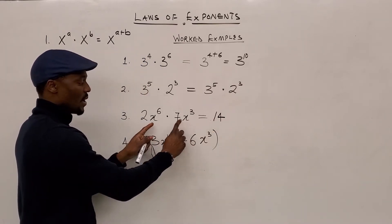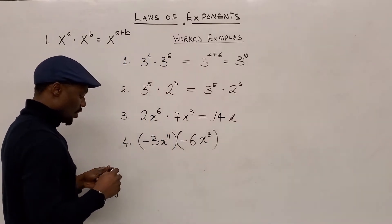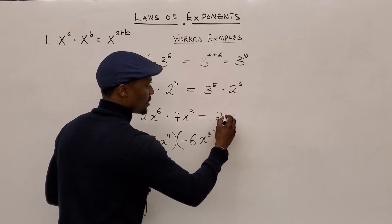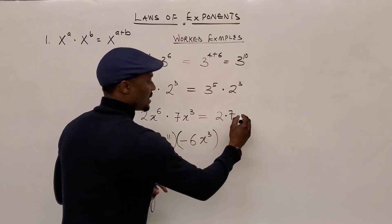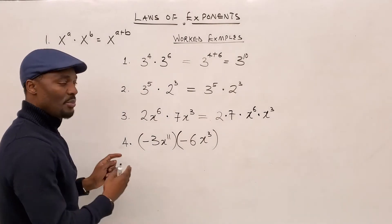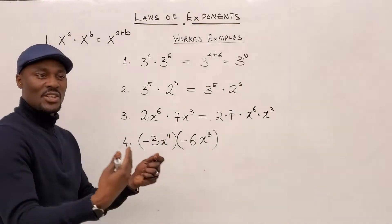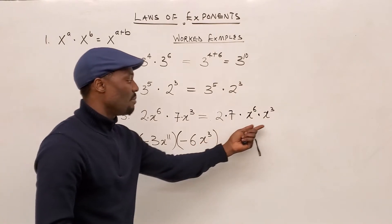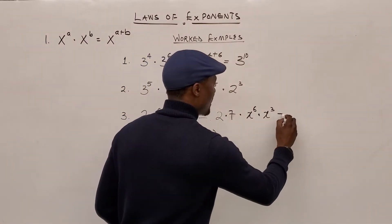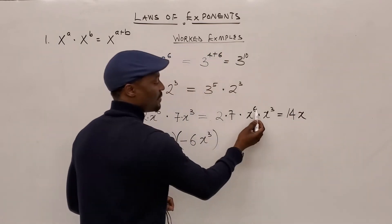Look at this as 2 multiplied by 7, then multiplied by x to the 6th multiplied by x to the 3rd. You've rearranged them side by side because this is just a multiplication sign — when you're multiplying, it doesn't matter which one you multiply first. What's important is that you put them side by side so you can apply this rule. So 2 times 7 gives you 14, and then x to the power of the sum of the powers.